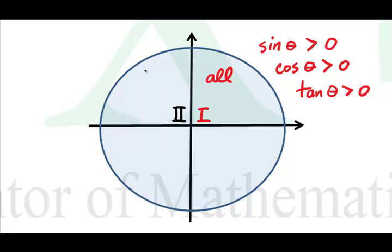Second quadrant, S. Sine theta will be positive, but cosine theta will be negative and tangent theta will be negative.